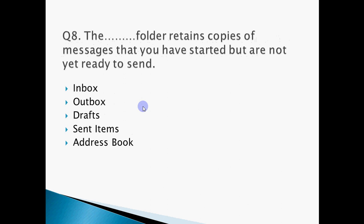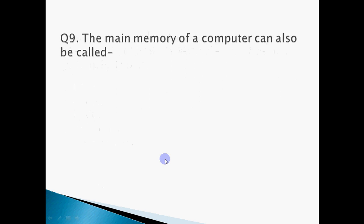Question 8: The dash folder retains copies of messages that you have started but are not yet ready to send. If you are writing an email and got busy midway and want to send it later, that half-written email is saved in Drafts. Inbox is for received mail, Outbox and Sent Items are for sent mail — Drafts is for incomplete, unsent mail. Note: the answer shown on the slide is incorrect, but the correct answer is Drafts.